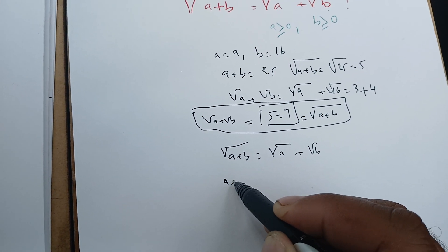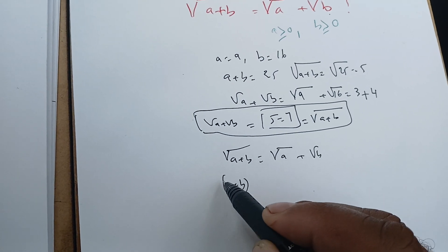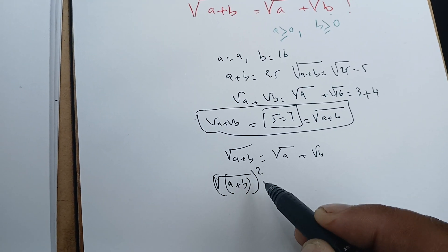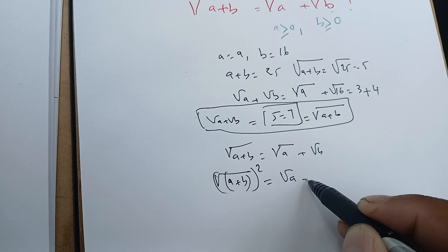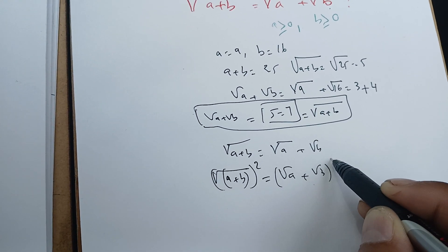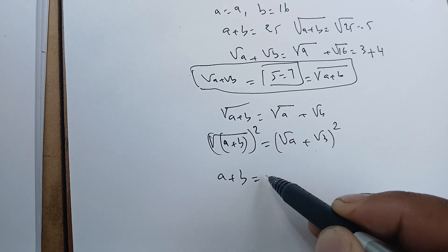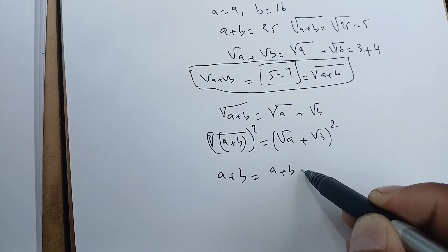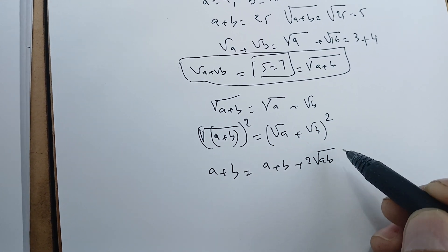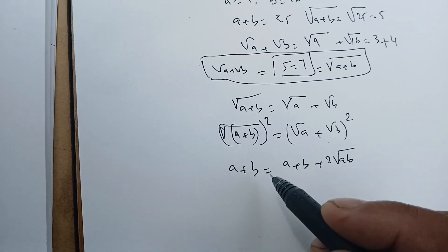Squaring everything, we have the left side is going to be on this one here, the right side is going to be square root of a plus square root of b squared. So this left side is going to be a plus b, and this one is going to be a plus b plus 2 square root of ab.